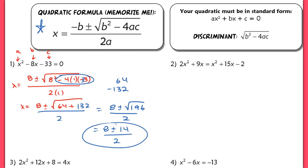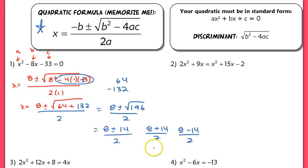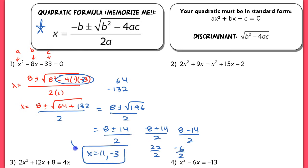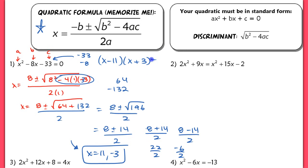The square root of 196 is a perfect square, so I end up with 14 here over 2. Make sure you clean up this answer and give two integers. I have 8 plus 14 over 2 and 8 minus 14 over 2, giving 22 over 2 and negative 6 over 2, so x is 11 and negative 3. Because I have integers as my answer, this should actually be factorable — there are two numbers that multiply to negative 33 and add up to negative 8, which would have been x minus 11 and x plus 3, giving x equals 11 and x equals negative 3.